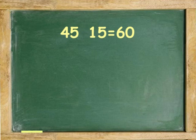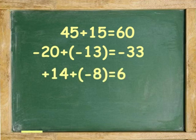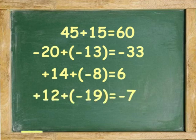From the use of the number line, we learned that adding two positive integers gives a positive answer. 45 plus 15 equals 60. Also from the number line, we learned that adding two negative integers gives a negative answer. Negative 20 plus negative 13 equals negative 33. And adding a negative and a positive number gives an answer that could be either positive or negative, depending on whether the larger number is positive or negative. Positive 14 plus negative 8 equals 6. Positive 12 plus negative 19 equals negative 7.